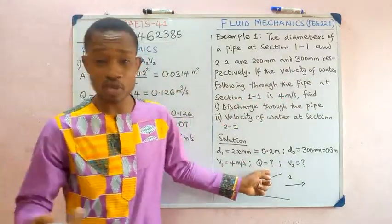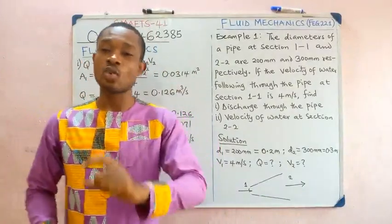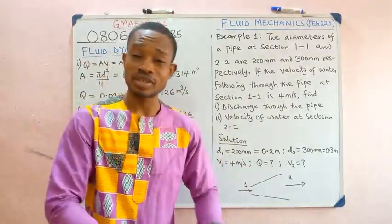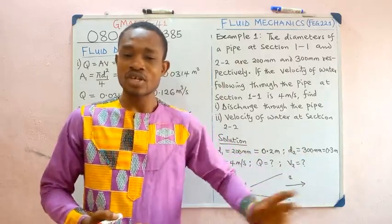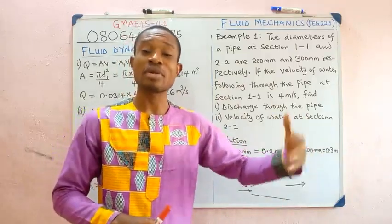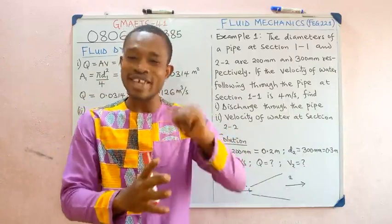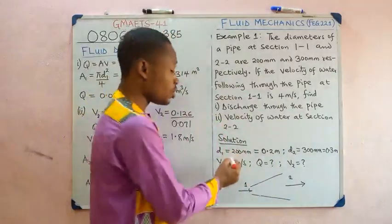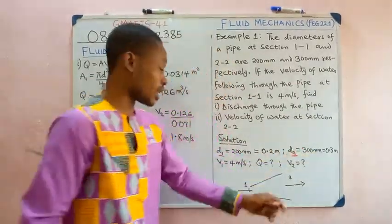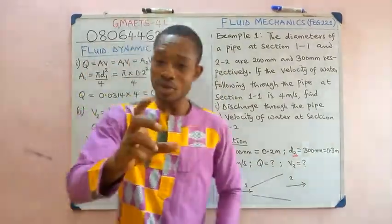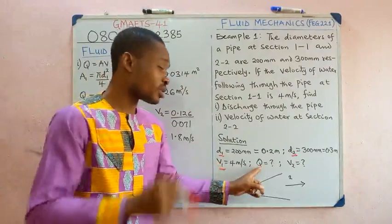From the data: d1 = 200 mm = 0.2 m, d2 = 300 mm = 0.3 m, and inlet velocity V1 = 4 m/s. Discharge Q and outlet velocity V2 are unknown. From the continuity equation, Q = A₁V₁ = A₂V₂ = constant. We use section 1 where all terms are known, since we cannot use the outlet section without knowing its velocity.